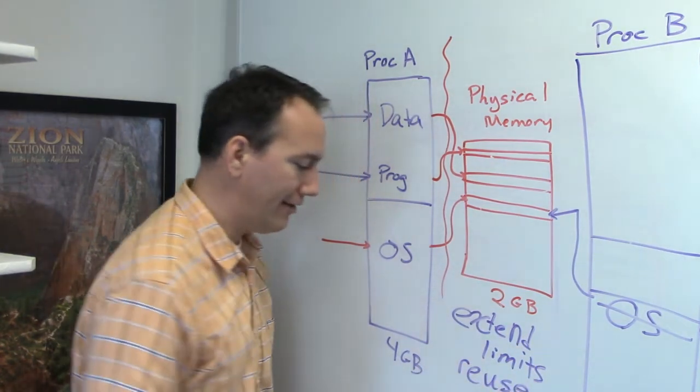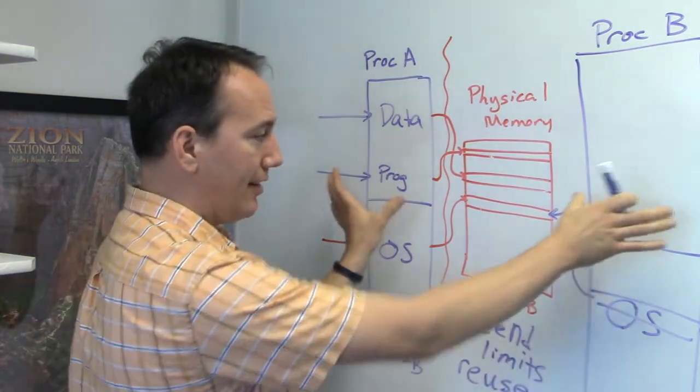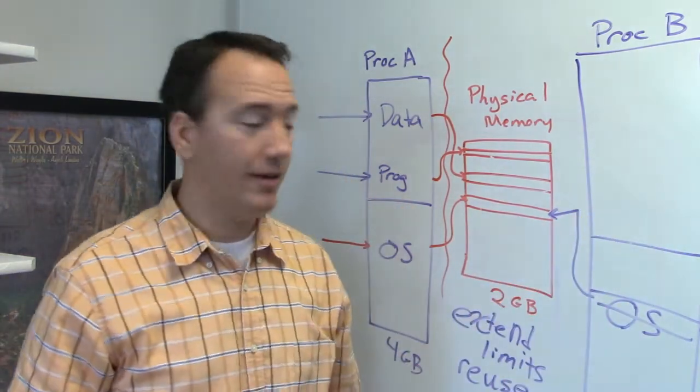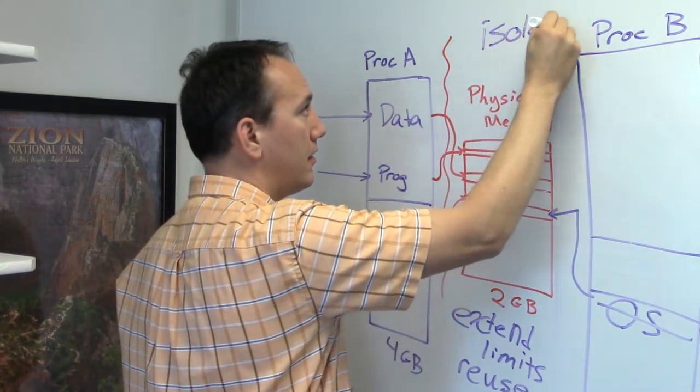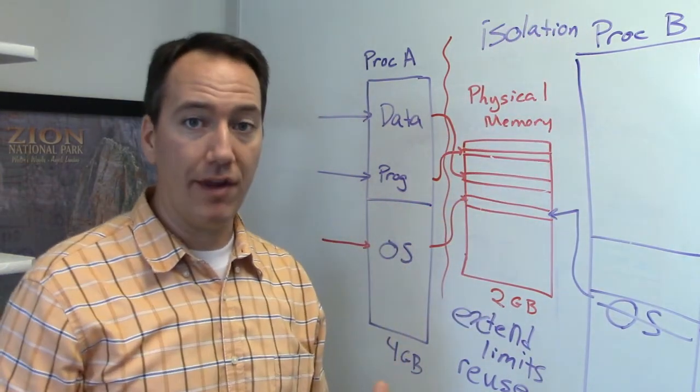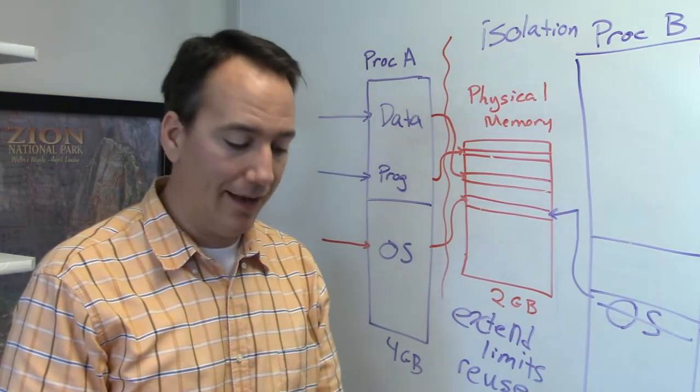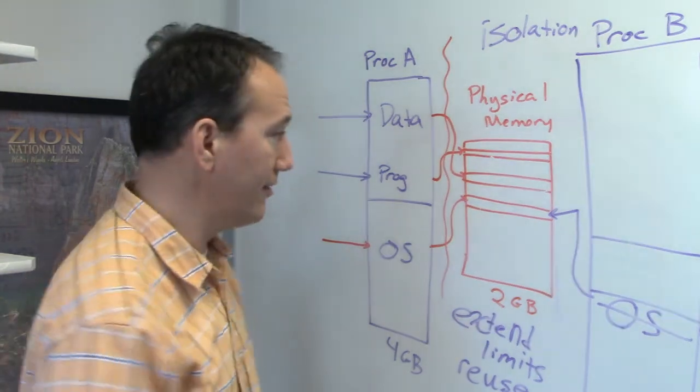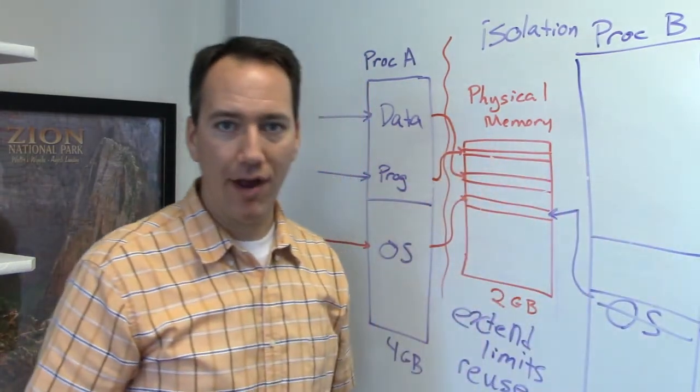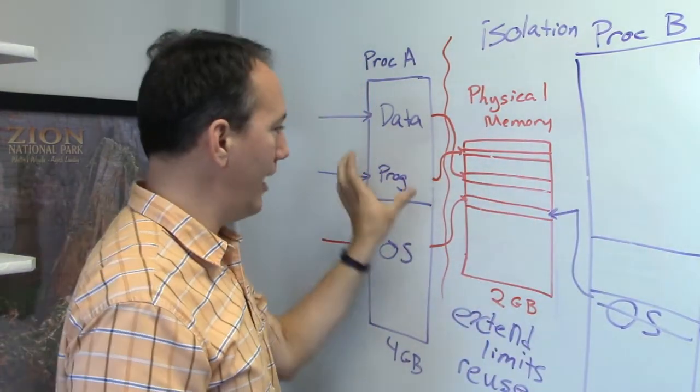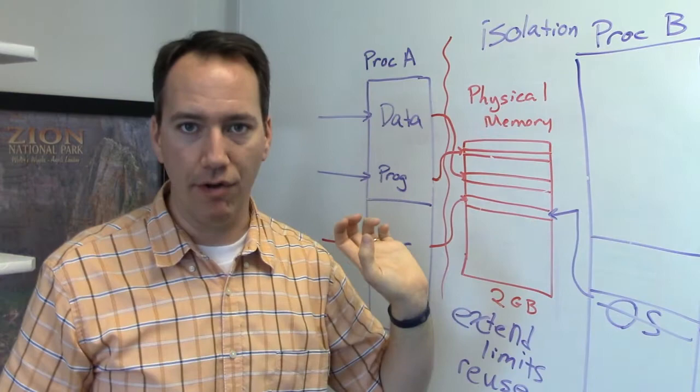The other thing that this scheme gives us is a technique called isolation. So isolation is really important in terms of security and in terms of stability of operating systems. I can't allow process A to access the memory of process B, because that would allow you to write programs that crash other programs on purpose. And we don't want to do that in terms of both security and stability.